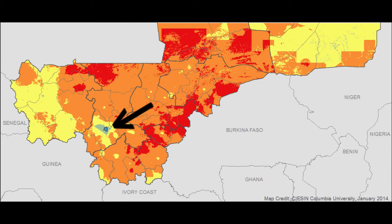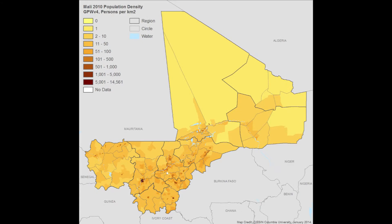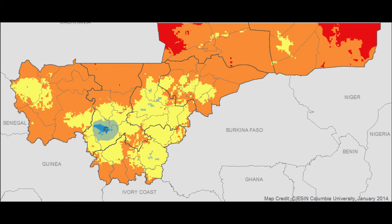The high sensitivity in the southeastern portions of Mali reveals the influence of high infant mortality in this region. This region is also comparatively more densely settled, as can be seen from the CIESIN data product Gridded Population of the World, also known as GPW.